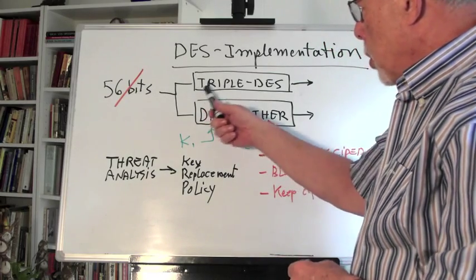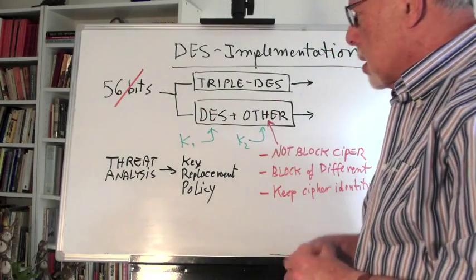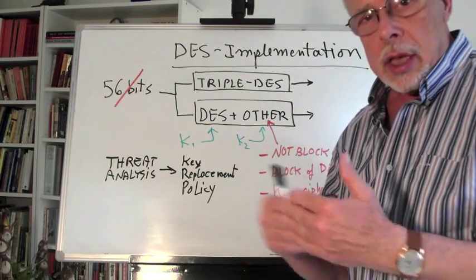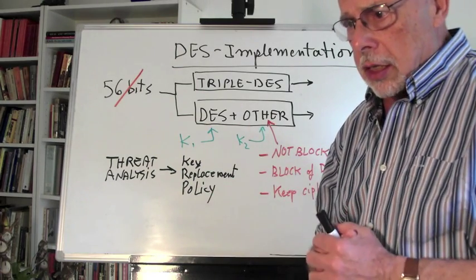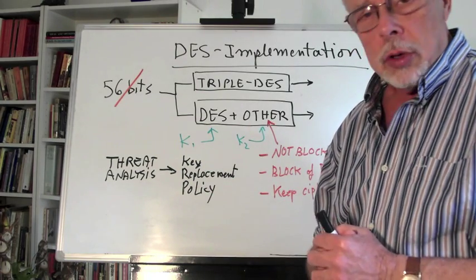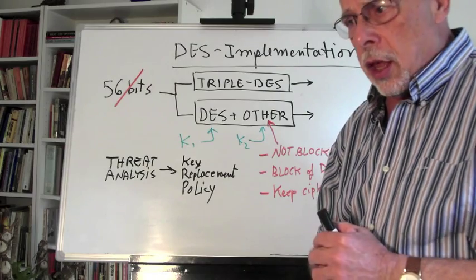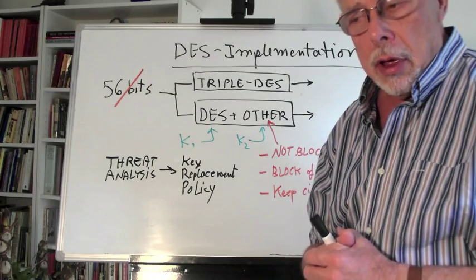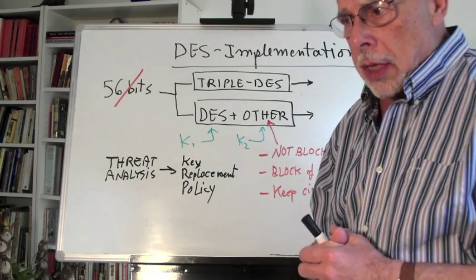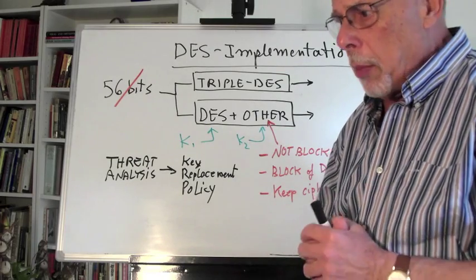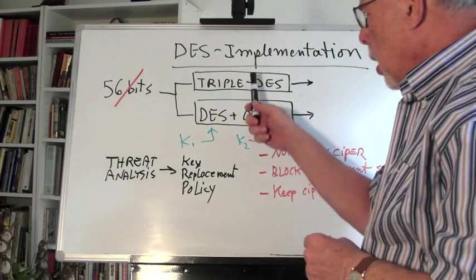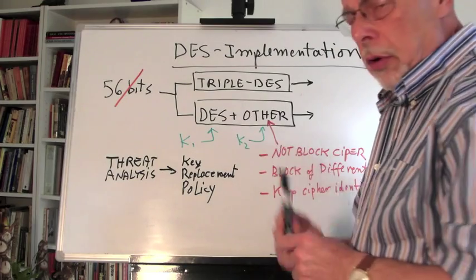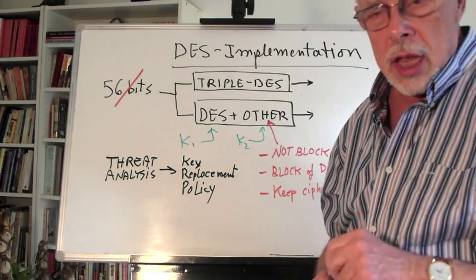Most people use Triple DES. Triple DES is simply using DES after DES, and it naturally increases the strength of the cipher. But I always recommend DES plus another cipher, not DES again.